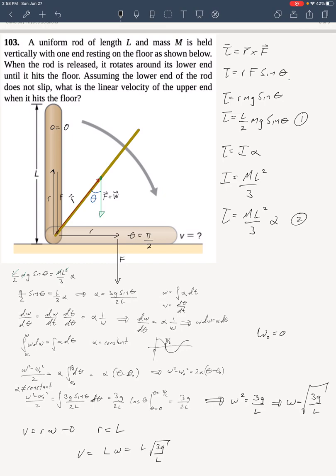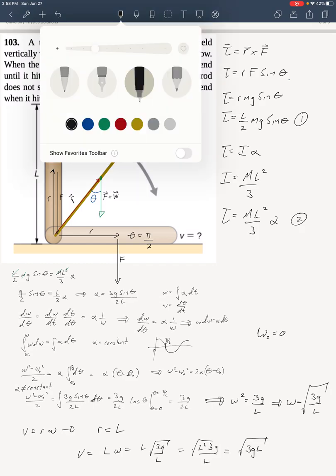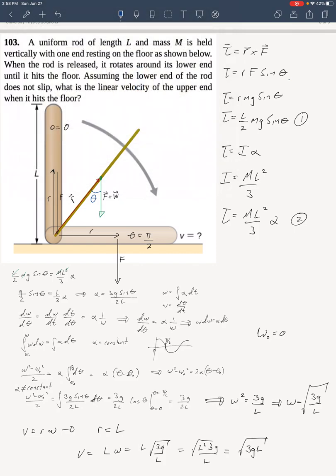So, the velocity at some point R, which is now a whole length away because it's at the tip of the stick, will be L times the square root of 3g over L. And how you choose to simplify that is up to you. You could bring it into the radical as L squared, which will give you then the square root of 3gL. Okay, I hope that helped.